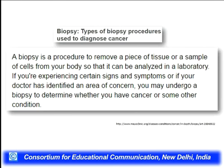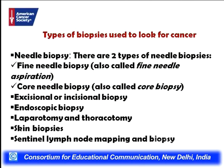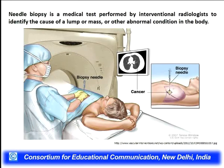One of the major techniques in cancer biology is biopsy — the removal of a piece of tissue or sample of cells from the body of the patient so that it can be analyzed in the laboratory. Biopsies have been broadly classified into major types: needle biopsy, which is further divided into fine needle biopsy and core needle biopsy; then excisional or incisional biopsy; endoscopy biopsy; laparotomy or thoracotomy biopsy; skin biopsy; and lymph node mapping and biopsies. The needle biopsy is augmented with the help of ultrasound transducers to categorize why exactly a cell mass or lump is present.